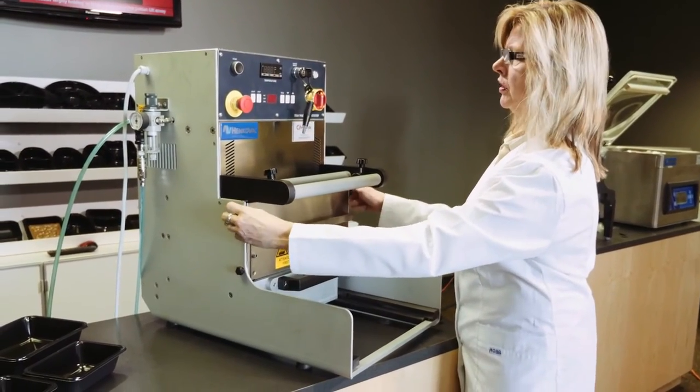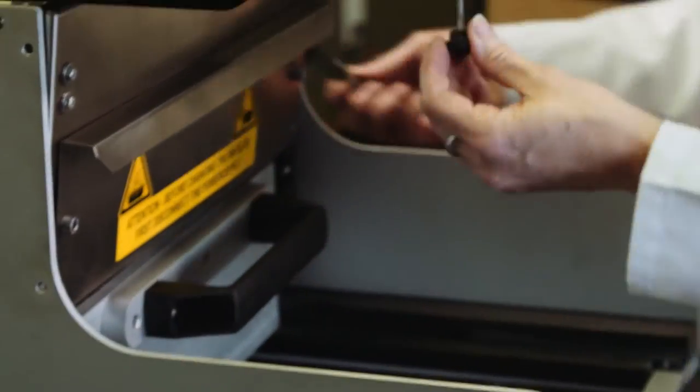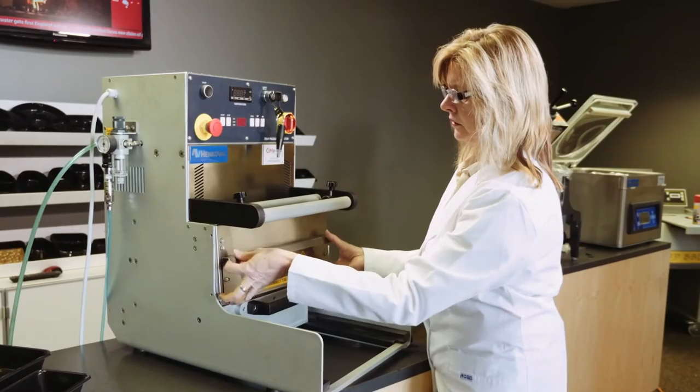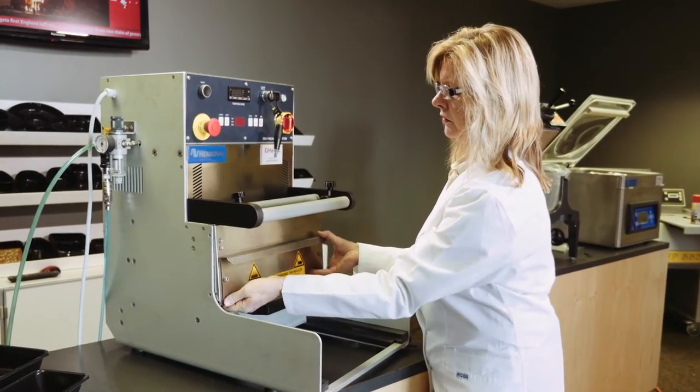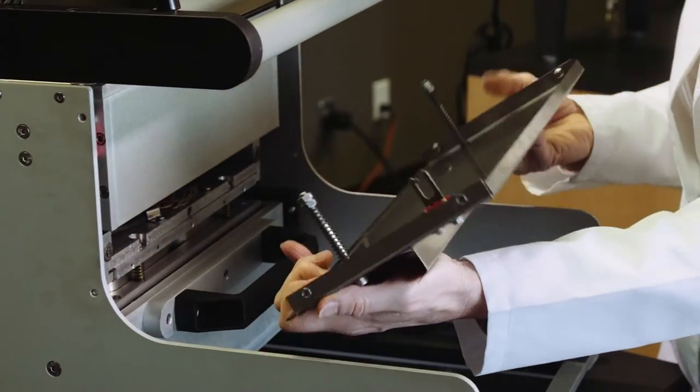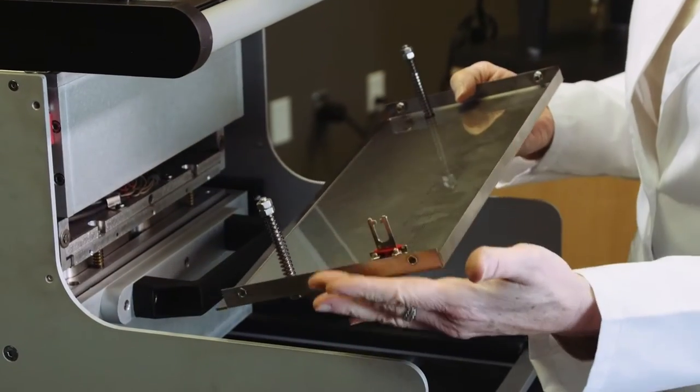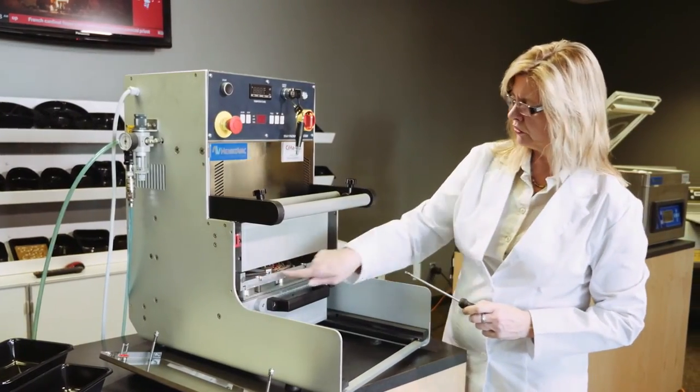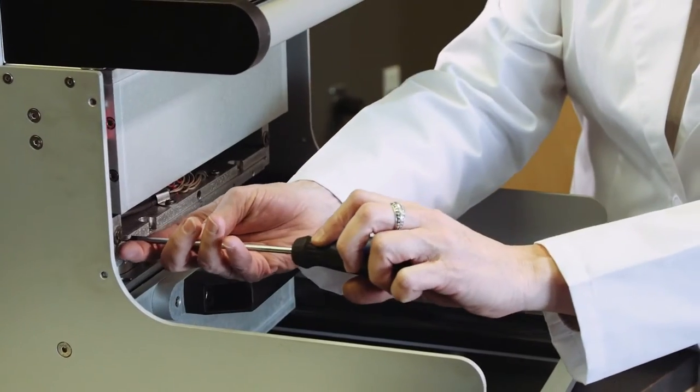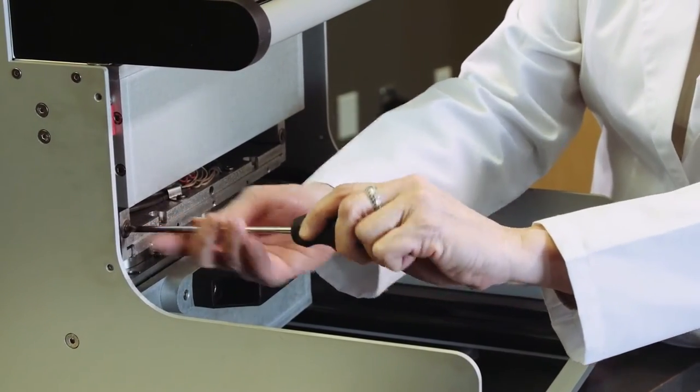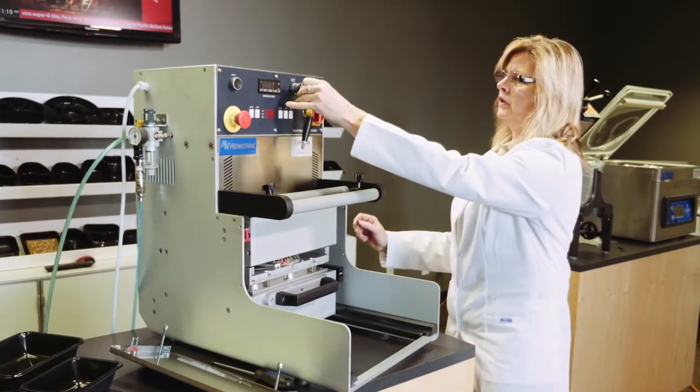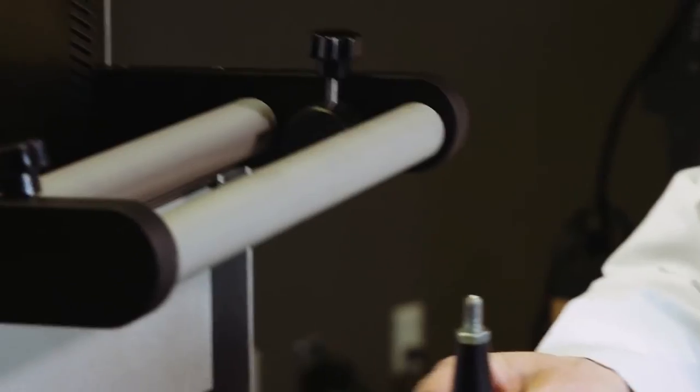We remove all four thumb screws and this panel. When we remove this panel, you'll see there is a safety switch here. If this is not plugged in, the machine will not function. Now we need our screwdriver to remove two screws here.